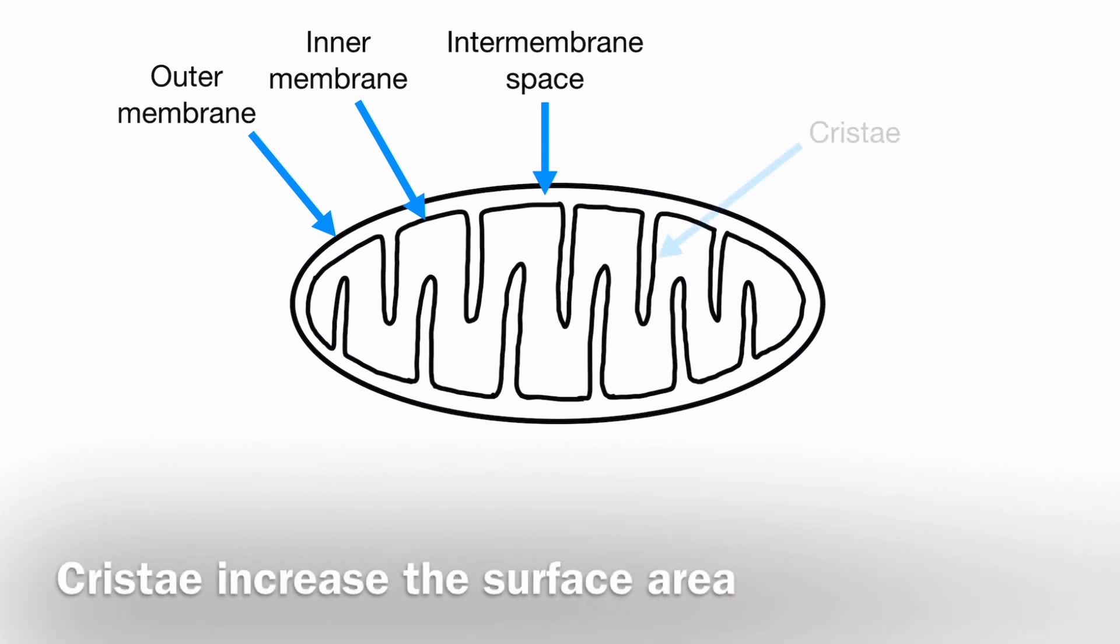Further adaptations of the mitochondria are that they have cristae. Cristae are where the inner membrane is arranged into folds, and this notably increases the surface area to volume ratio within the mitochondria.